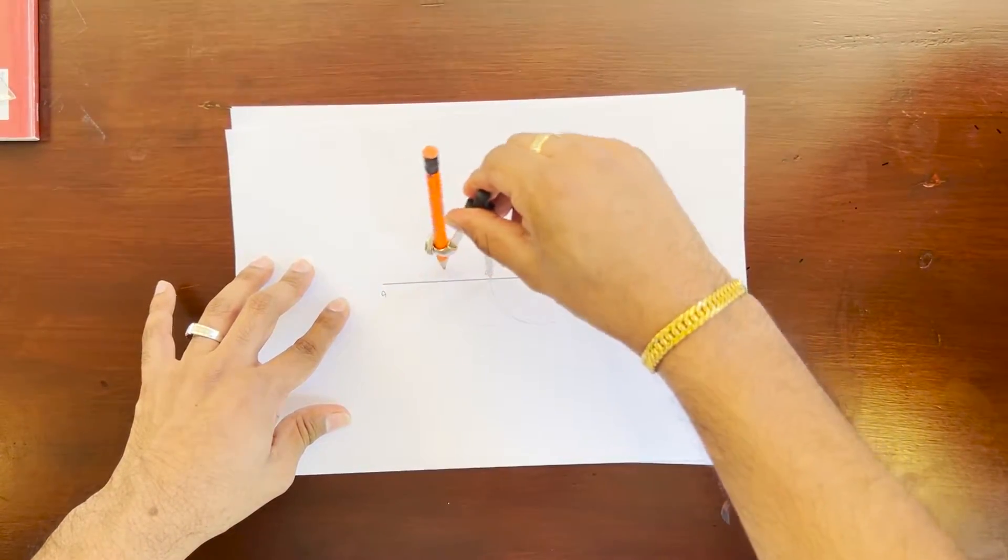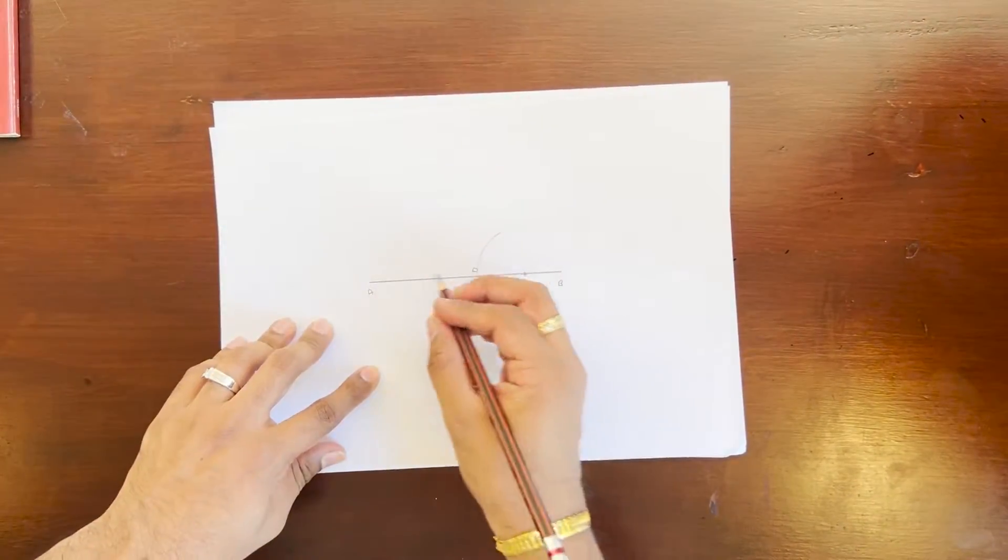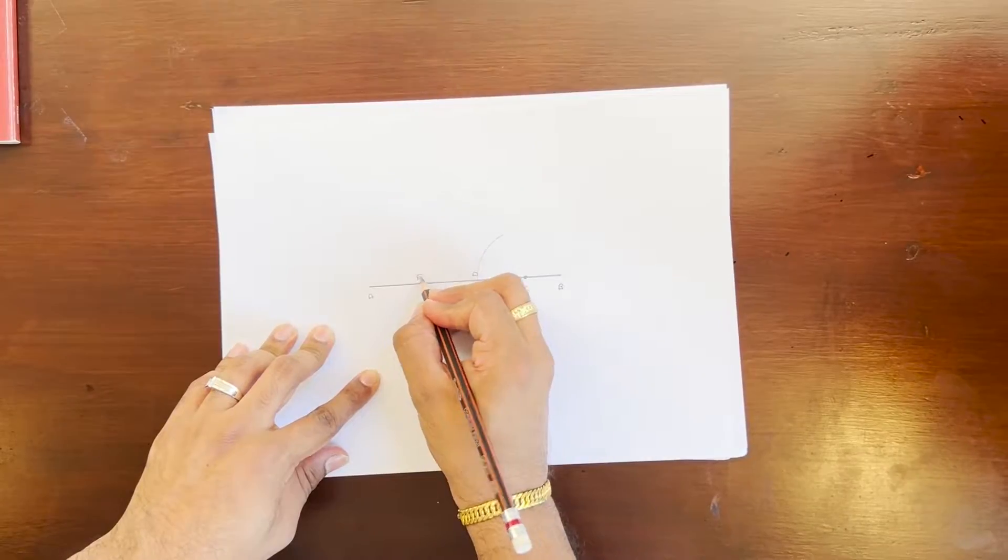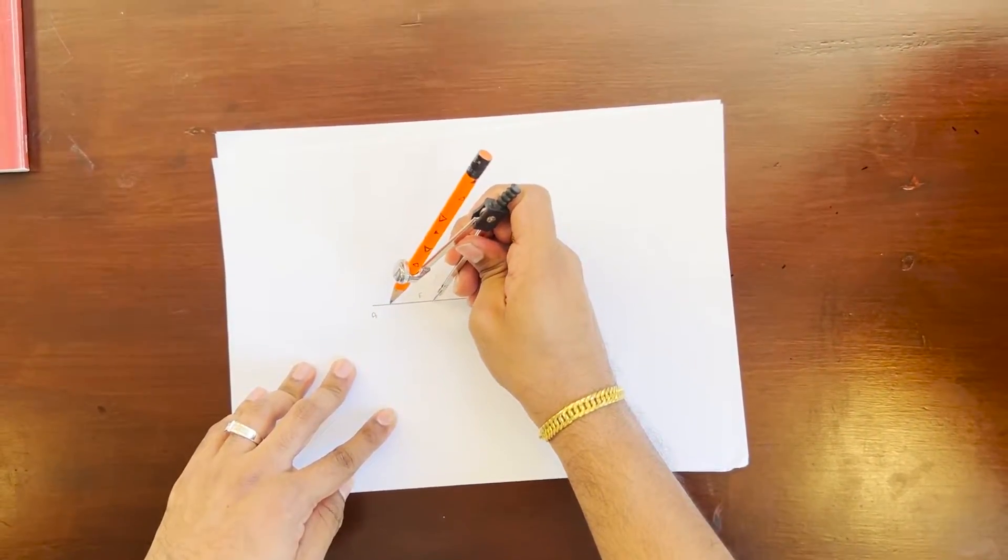Once we get the arc, we're going to name it again. I'm going to call it point E. Now there's two more steps left.